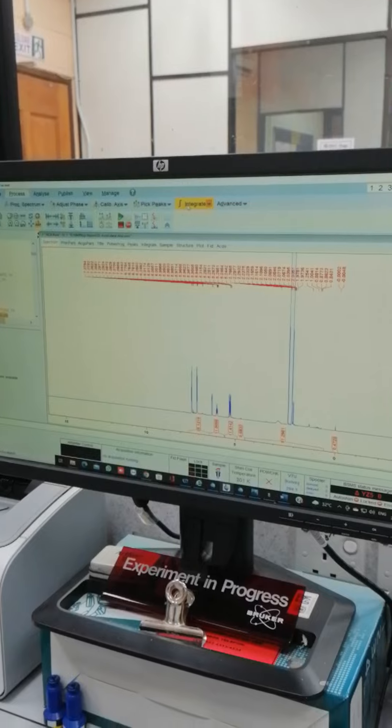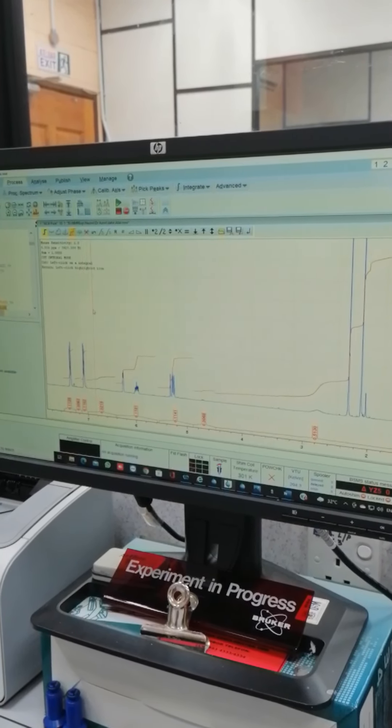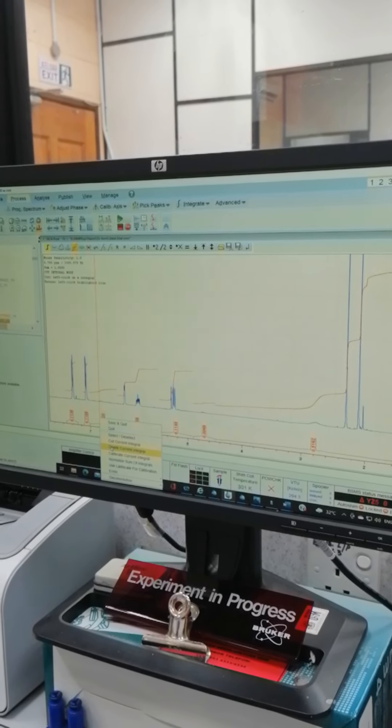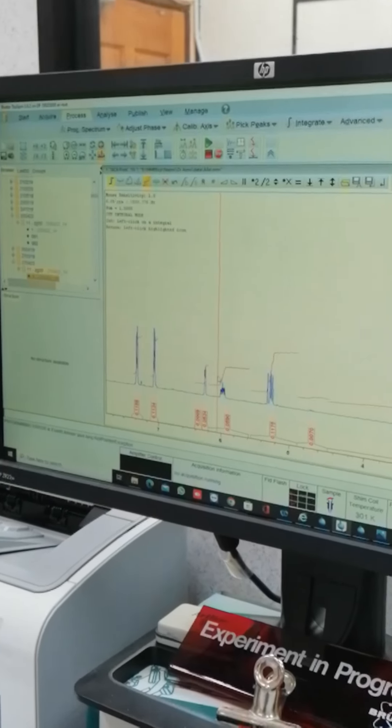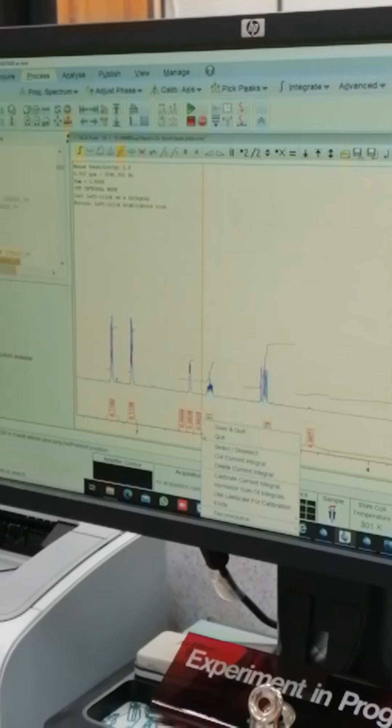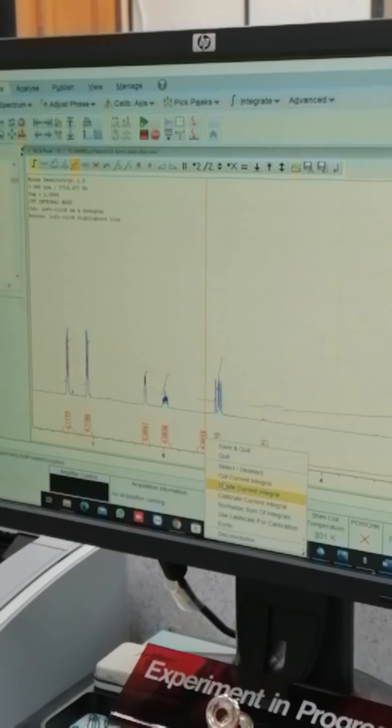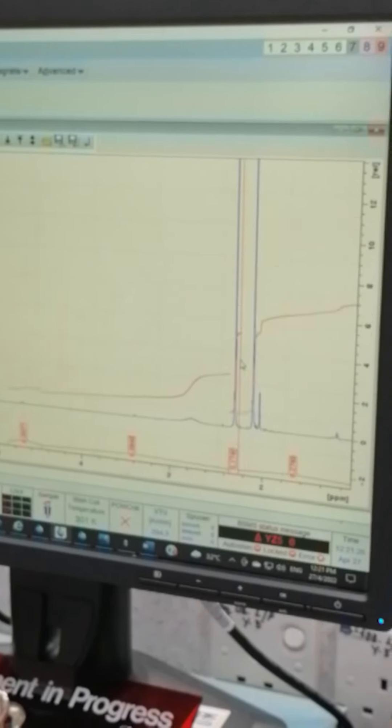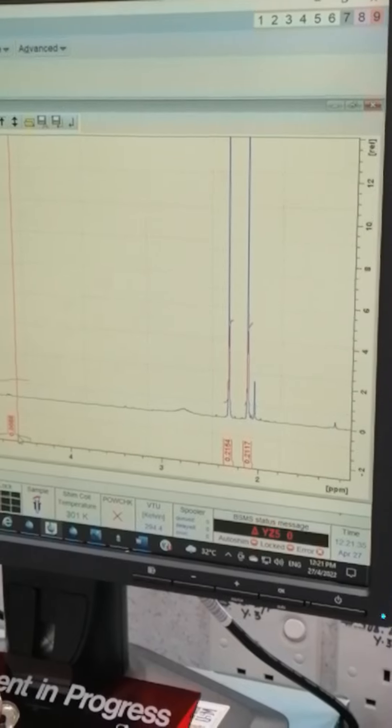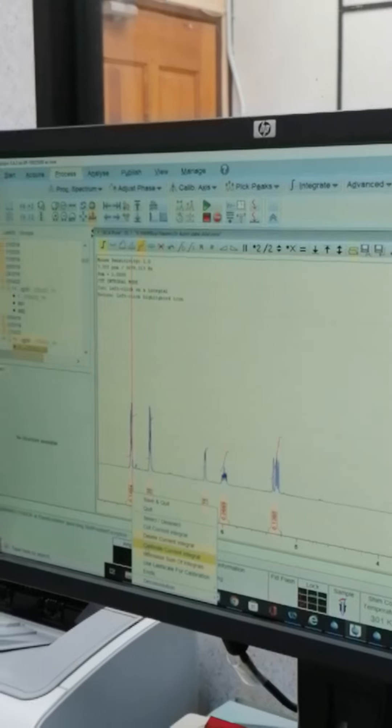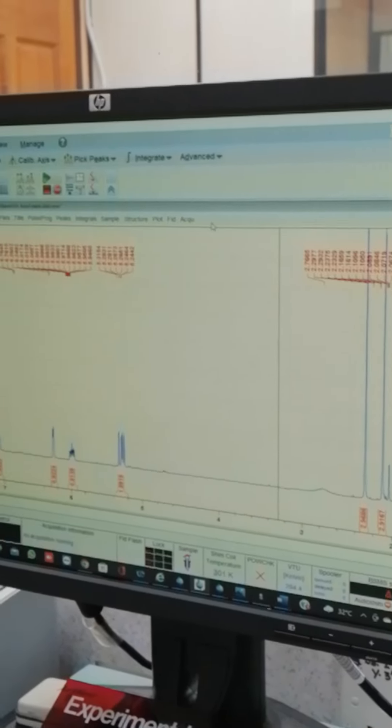So we are doing peak picking and integrations. We are doing first for integrations. We have two methyl groups there. And we select one as a reference. We select this one as a zoom program. So it automatically calibrates all the spectra. So we have to save these spectra.